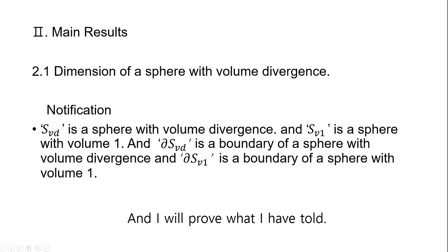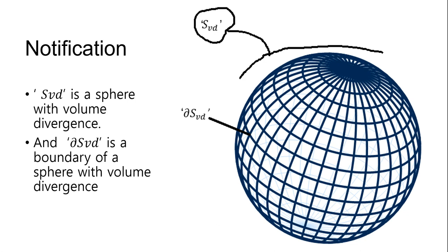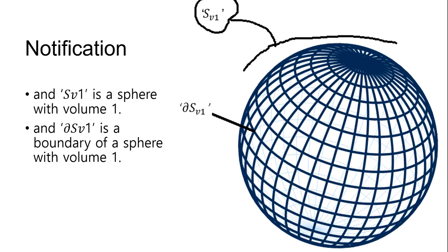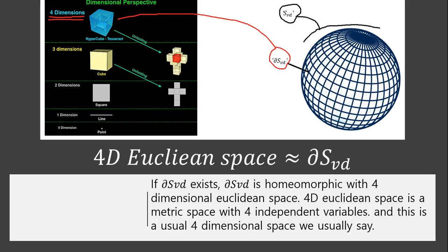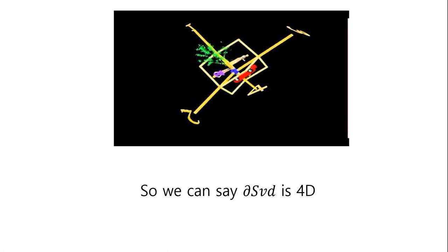Main result: The dimension of a sphere with volume divergence. Notation: SVD is a sphere with volume divergence. DSVD is a boundary of a sphere with volume divergence. Sv1 is a sphere with volume 1, and DSv1 is a boundary of a sphere with volume 1. If DS3D exists, DS3D is homeomorphic with 4-dimensional Euclidean space. 4D Euclidean space is a metric space with four independent variables — this is the usual 4-dimensional space we refer to. So we can say DS3D is 4D.